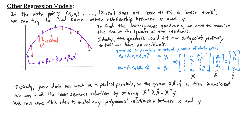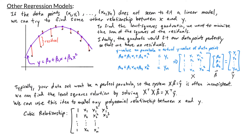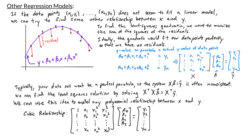We can use this idea to model any polynomial relationship between x and y. For example, if x and y have a cubic relationship, then my design matrix would be of the form [1, x₁, x₁², x₁³; 1, x₂, x₂², x₂³; …; 1, xₙ, xₙ², xₙ³] times [β₀, β₁, β₂, β₃] equals [y₁, y₂, …, yₙ]. To find the least squares solution we solve X^T X β = X^T y. A matrix of this form is called a Vandermonde matrix.